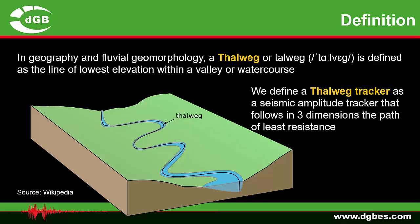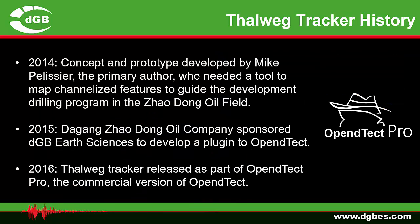It is a seismic amplitude tracker that follows in three dimensions the path of least resistance. The concept and prototype software were developed by Mike Pellachier in 2014 when he was working on the Zhaodong oil field in China, where he needed a tool to map channelized features to guide the development drilling program. In 2015, Da Gang Zhaodong oil company sponsored DGB to develop a plug-in to OpenDetect, released in 2016 as part of the OpenDetect Pro software.